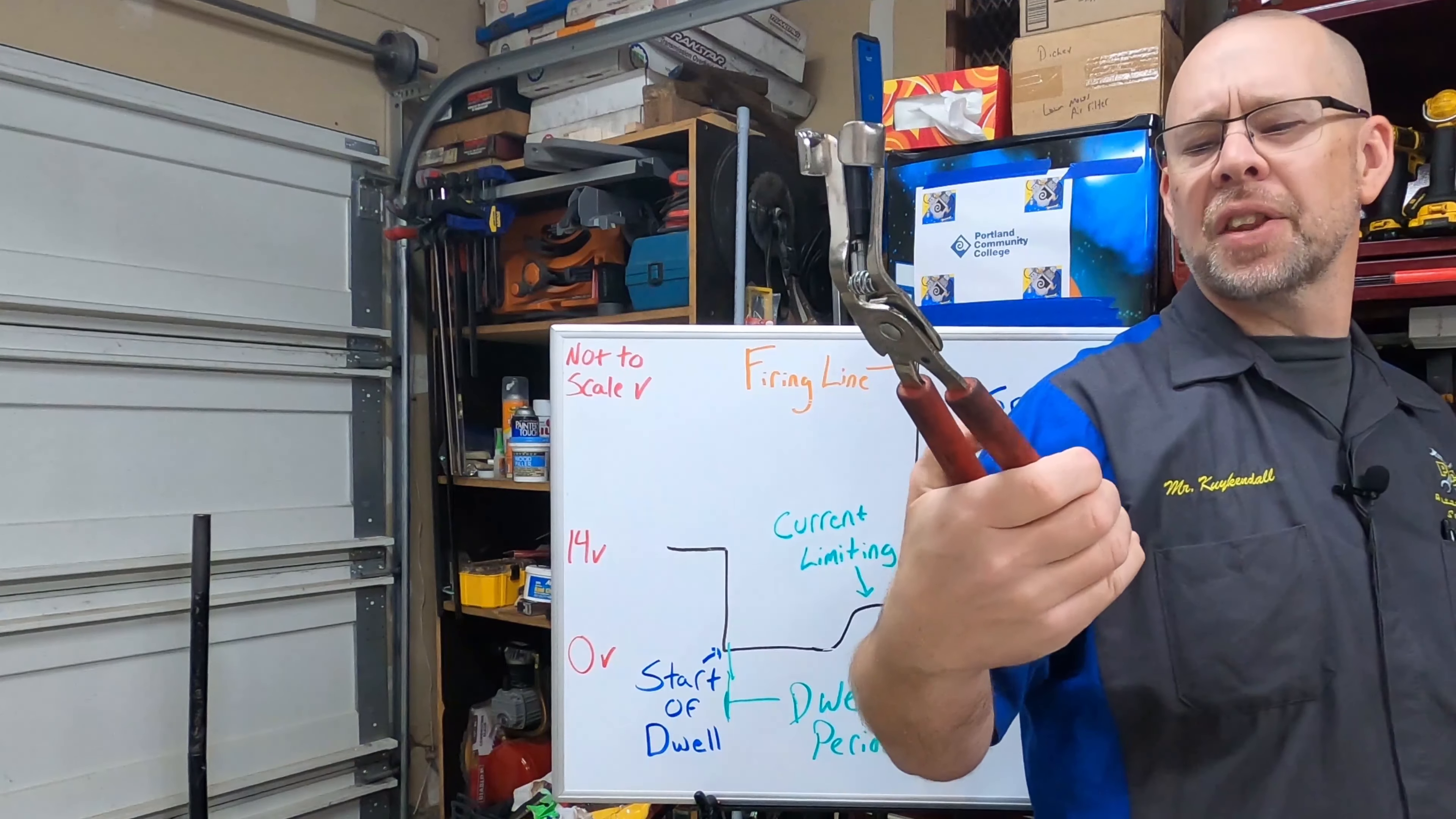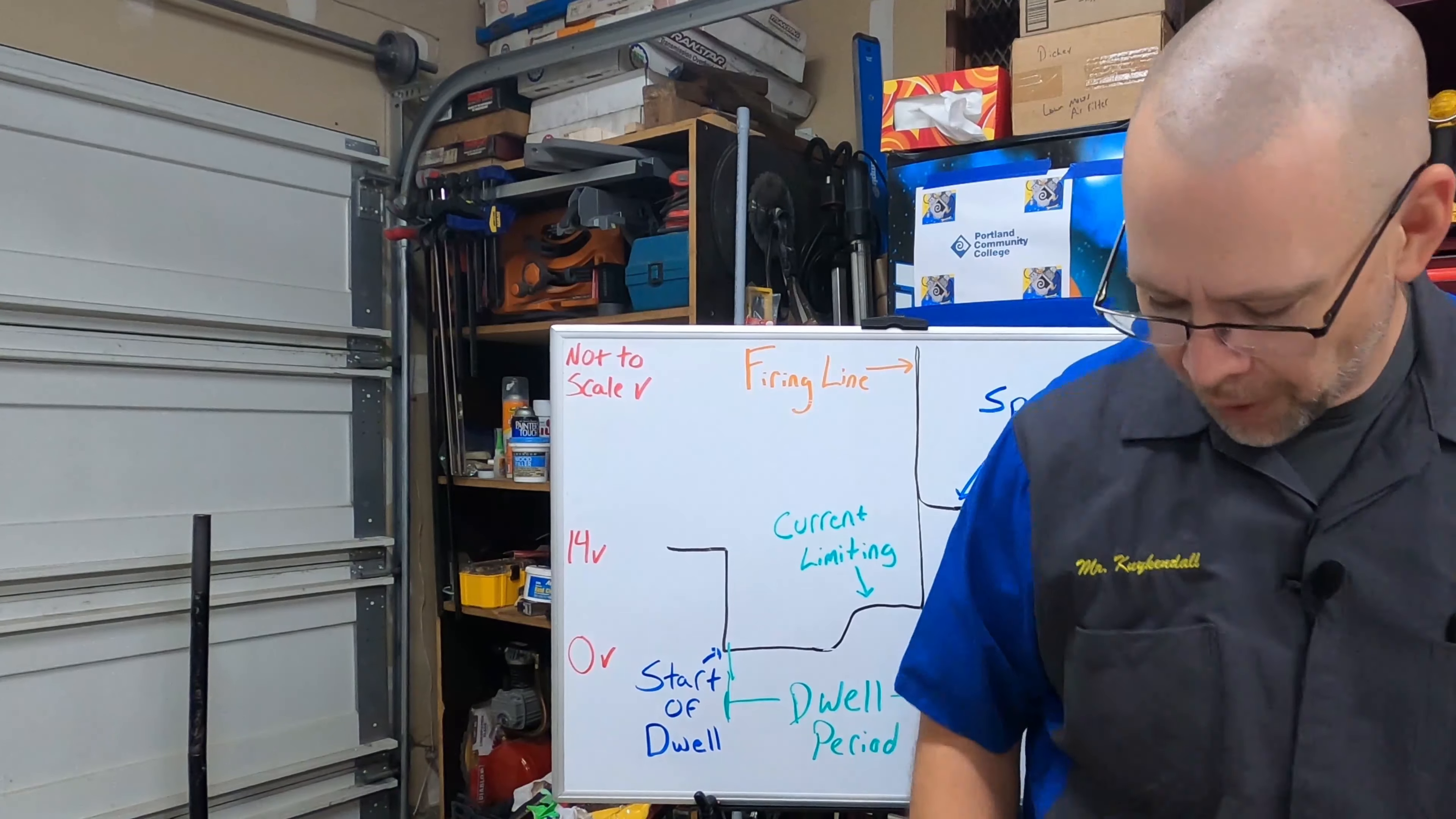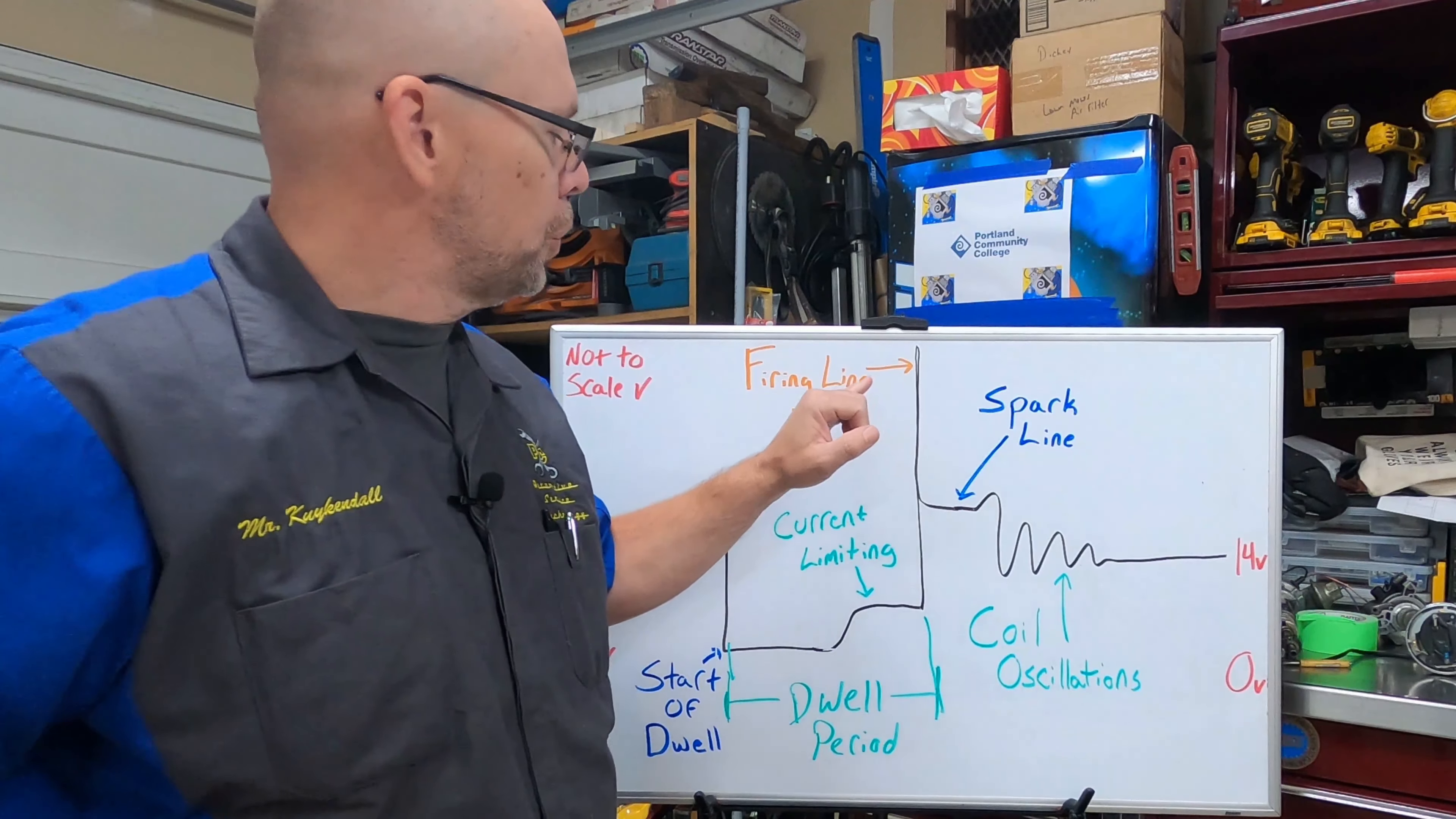These are spark plug wire pliers, I can hang on to the ends. Now they aren't marked as truly insulated but they actually work really well. If I don't use something like this then I can get zapped pretty good with some juice I don't want that.